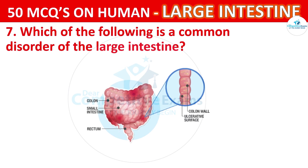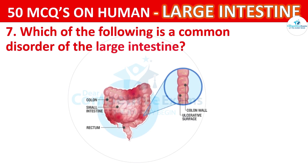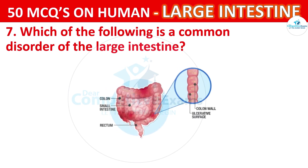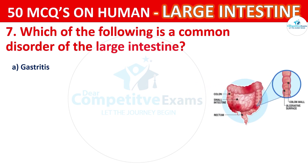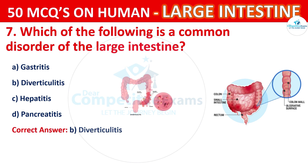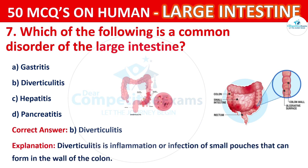Question number 7. Which of the following is a common disorder of the large intestine? Your options are: Gastritis, Diverticulitis, Hepatitis, or Pancreatitis. The correct answer is B, that is Diverticulitis. Diverticulitis is an inflammation or infection of small pouches that can form in the wall of the colon.